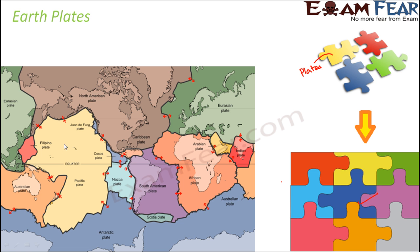Each plate is being denoted in a different color. Here you see this is the Pacific plate. You have the North American plate, you have the Arabian plate, you have the Indian plate, the Eurasian plate. Similarly you have so many different plates.